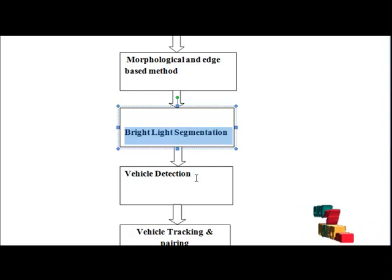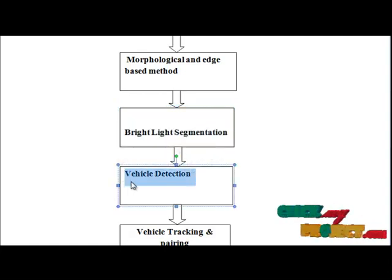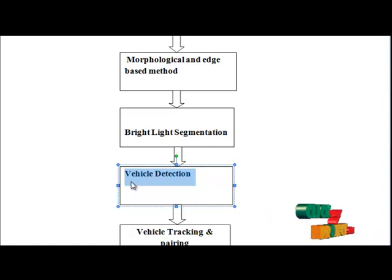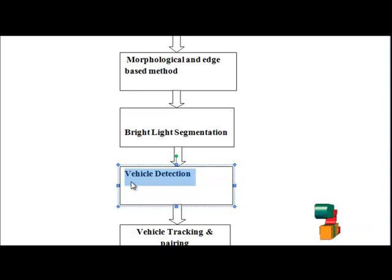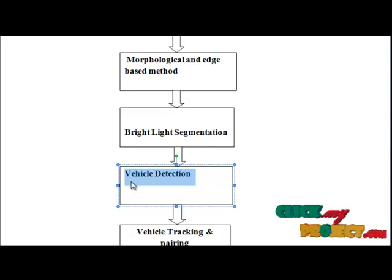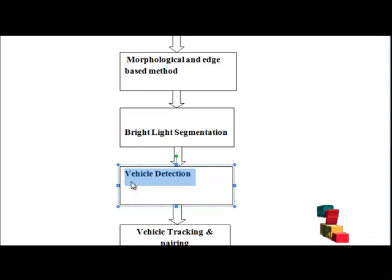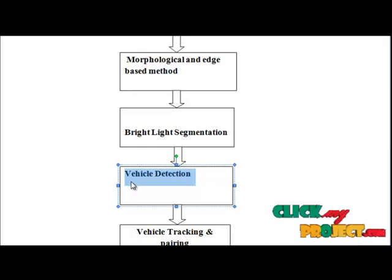The next step is vehicle detection. To extract potential vehicle light components from the detection zone in the bright object plane, a connected components extraction process is performed to label and locate the connected components of the bright objects. Extracting the connected components reveals meaningful features of location, dimension, and pixel distribution associated with each connected component.